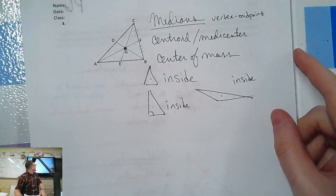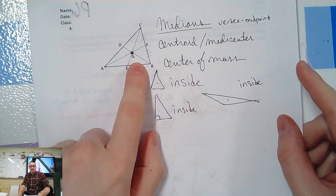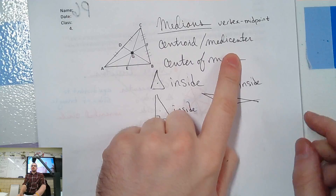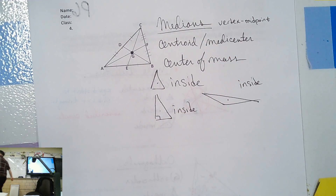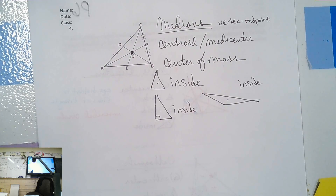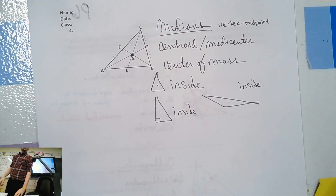And then we have medians, which all intersect at the medi-center — if you're from Eastern Europe or learned math on YouTube — or if you call it the centroid. That is the center of mass, and the center of mass is always on an object.